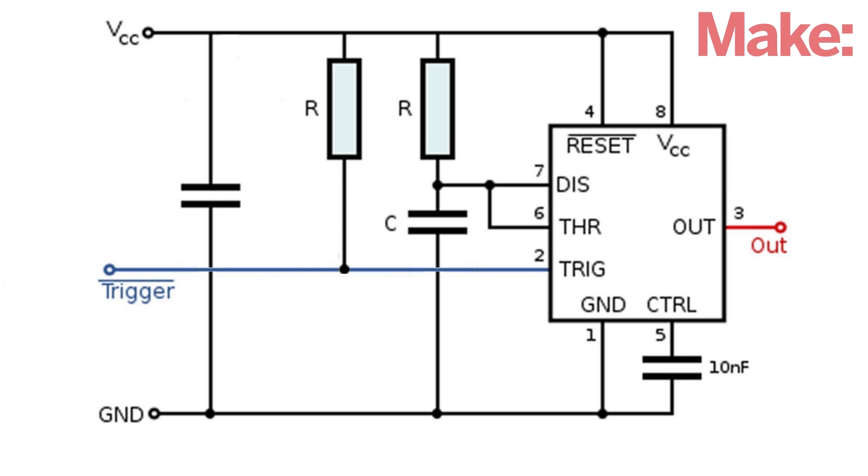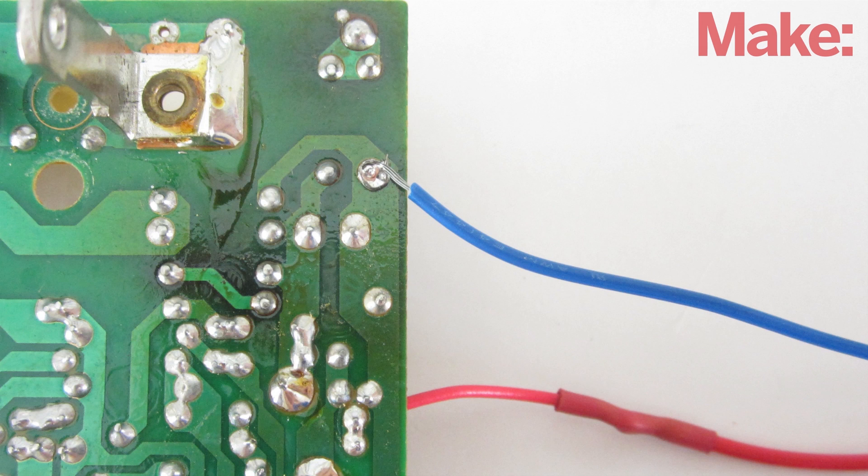The control circuit is a 555 timer in monostable mode. When the input at pin 2 receives a low signal from the doorbell, it turns on the light for a period of time set by the resistor and the capacitor. The positive and negative terminals of the control circuit are connected to the positive and negative wires from the doorbell's power supply.